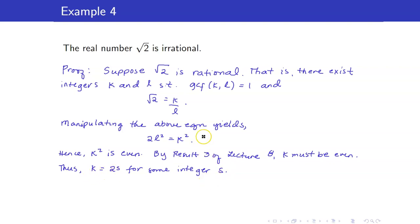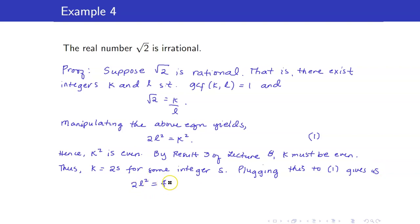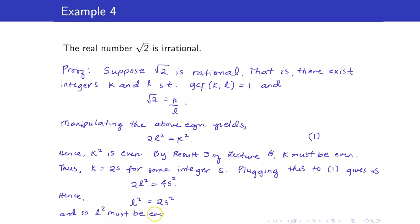We plug K = 2s into the equation 2L² = K² to get 2L² = 4s², hence L² = 2s². This means L² equals 2 times an integer, so L² is even, and therefore L is also even.